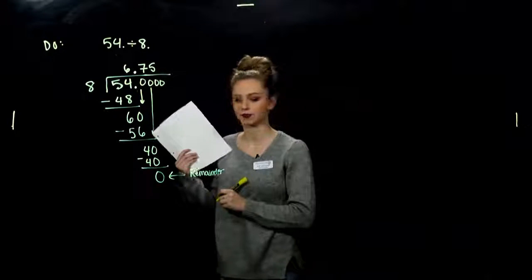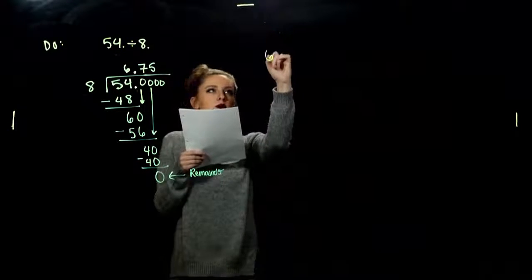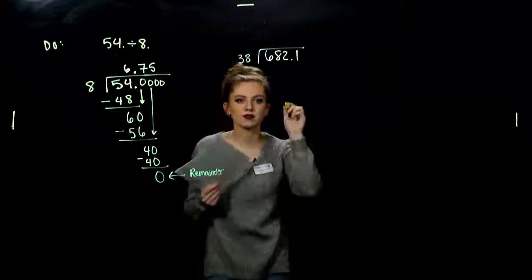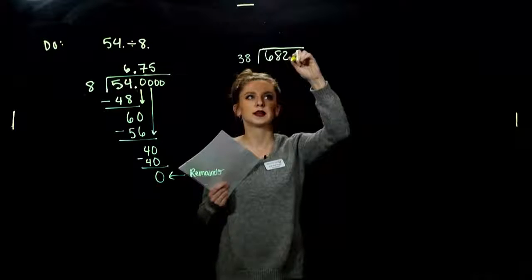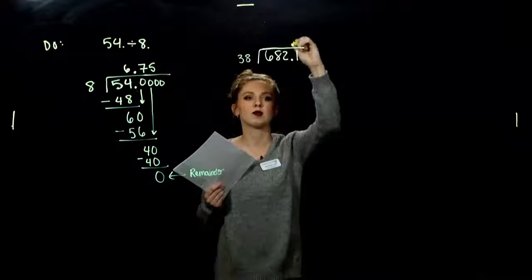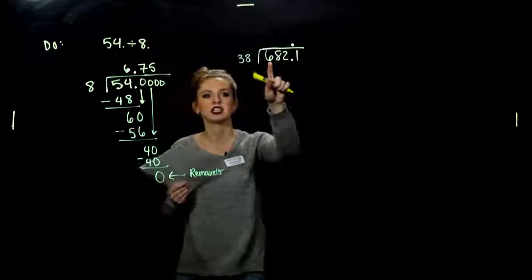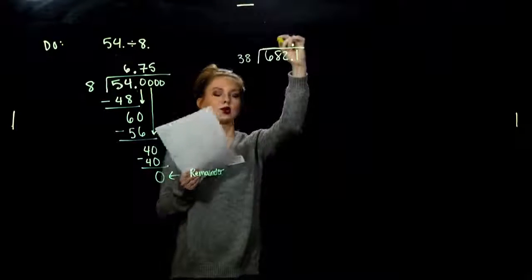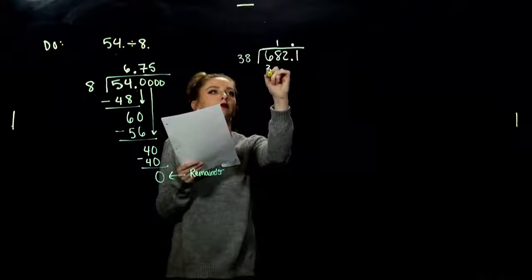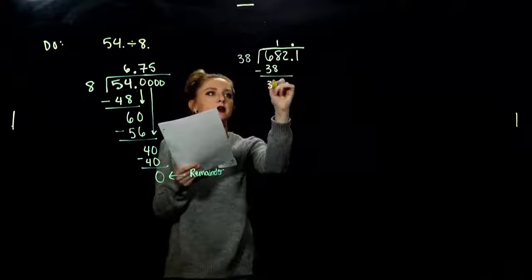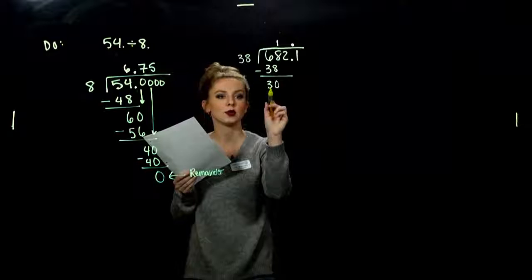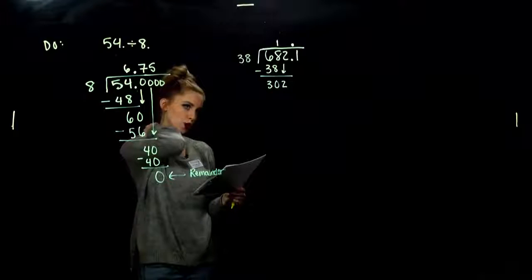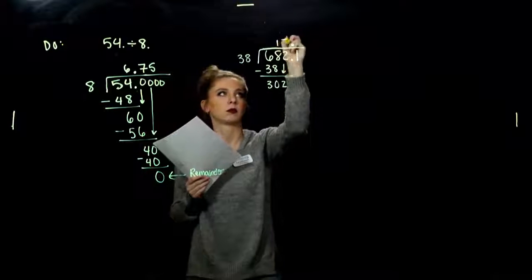Let's do some more. 682.1 divided by 38. First thing we should always do in these examples. Where is my decimal down here? It needs to be in the same place up there. And we can ask, does 38 go into 6? Nope. Too small. So 38 into 68. Goes in one time. So I can look at the difference. I'm looking at 30. 38 doesn't go into 30. It's too large. So we need to bring down the next place value. How many times can 38 go into 302 without going over? If you don't know that one, that's fine. Seven times.